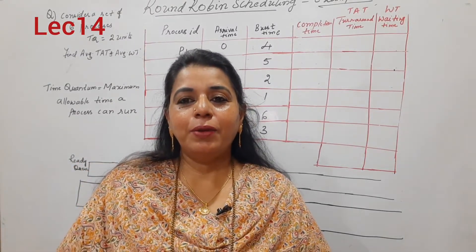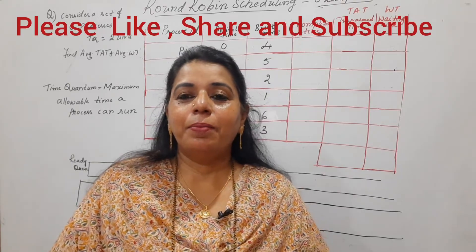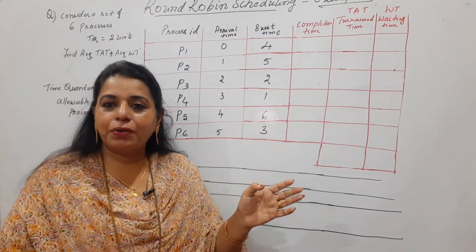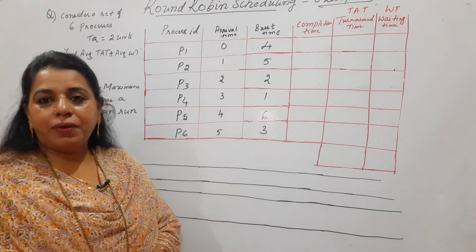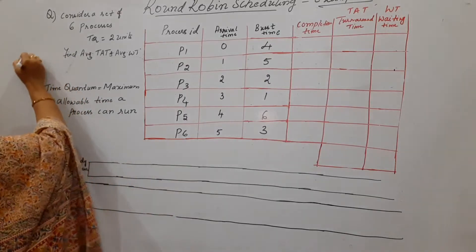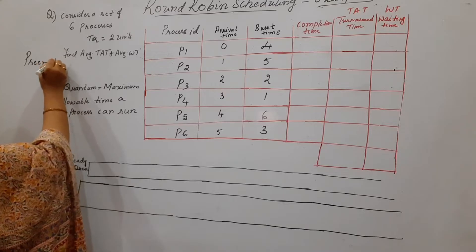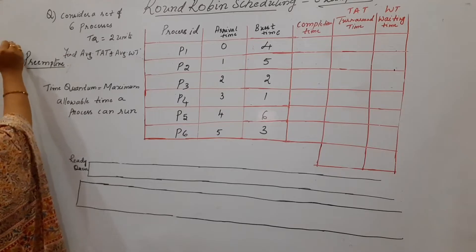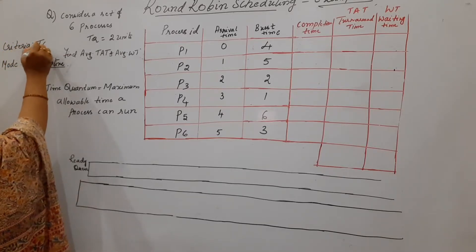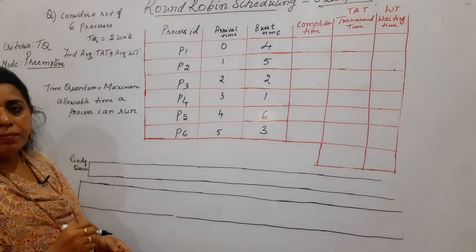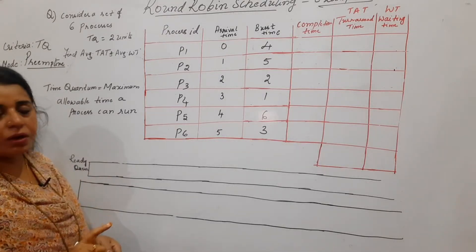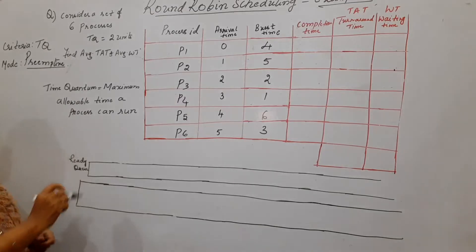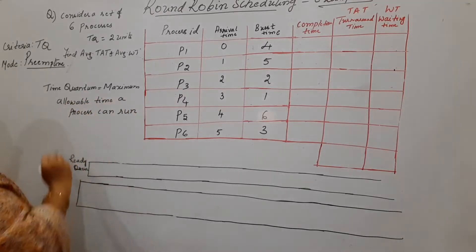Hello viewers, welcome back to my channel. Today's topic is Round Robin Scheduling. In the previous session I already explained an example on Round Robin Scheduling — this is the second example. Round Robin operates in preemptive mode, and the scheduling criteria is the time quantum. Before solving any problem, recall the mode of operation and criteria first.